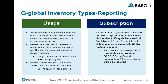There are two inventory types for reporting in Q-Global: usages and subscriptions. Usages allow a report to be generated from any of the three delivery methods and must be used to generate a report for on-screen and remote on-screen administration methods. Q-Global can be used as the record form and the scoring program. Usages can be allocated to a user, an account, or a subaccount. Subscriptions are used to generate an unlimited number of reports when using the manual entry method. These subscriptions are available in one-, three-, and five-year intervals. For example, if an account has ten users who want to generate an unlimited number of reports through the BASC score report subscription, ten subscriptions would be required.